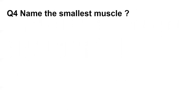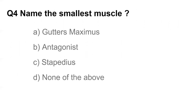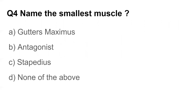Question number four: Name the smallest muscle. Options are gluteus maximus, antagonist, stapedius, and none of the above. The answer is stapedius — stapedius is the smallest muscle in the human body.